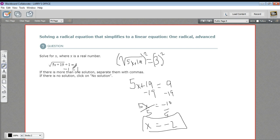Let's plug x equals minus 2 in here. So 5 times minus 2 would be negative 10 plus 19, so that's the square root of that, plus 1 equals 4. Oops, 19. So negative 10 plus 19 is 9,